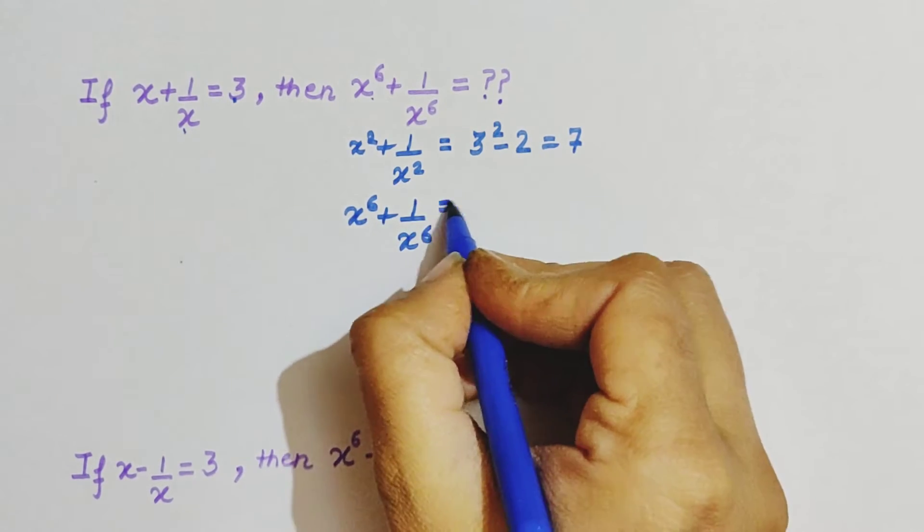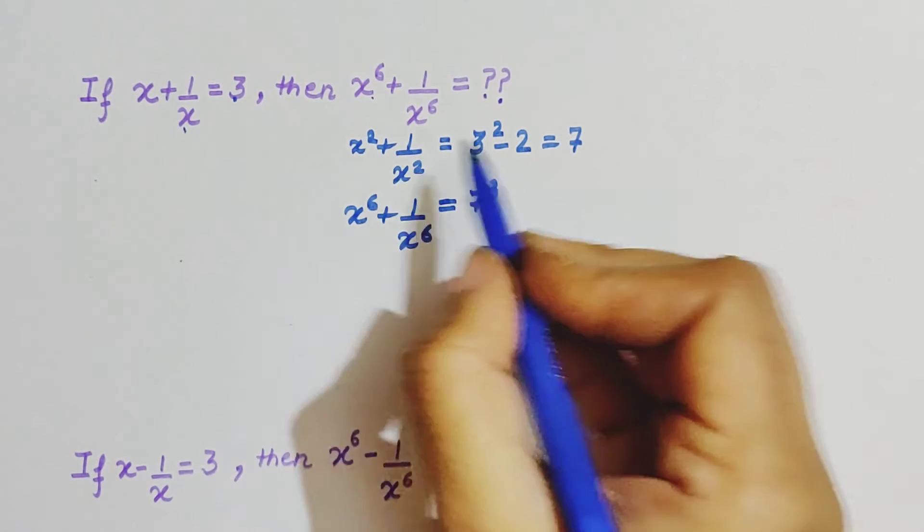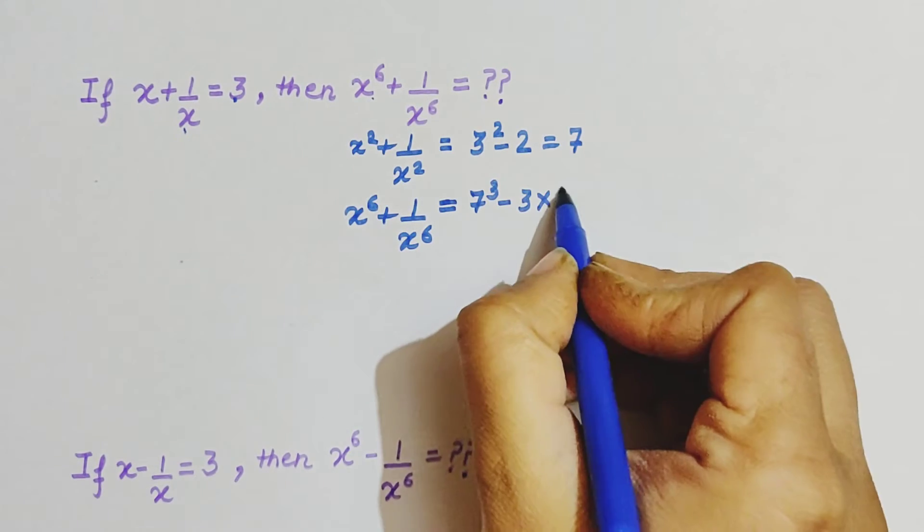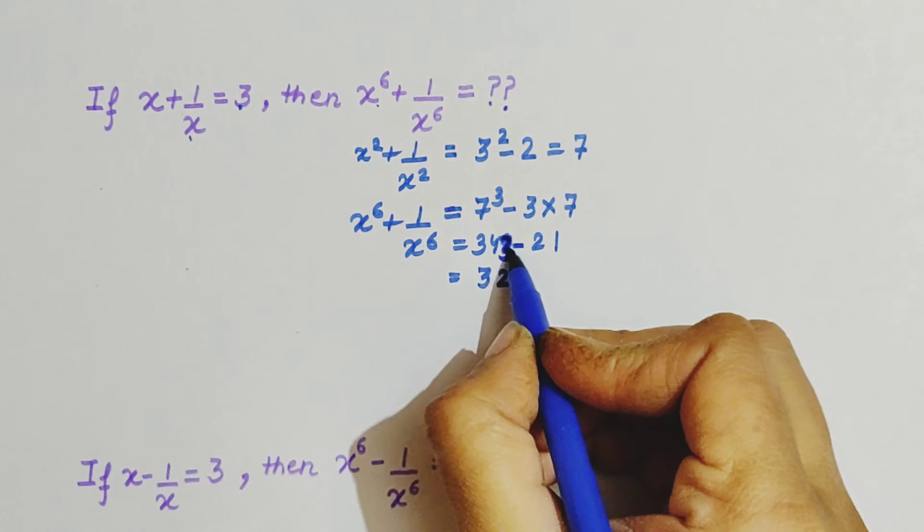Here there is plus, so minus 3 times of 7. And this will be 343, so this will be 322. One thing more, in this technique the sign we are taking is based on the given equation.